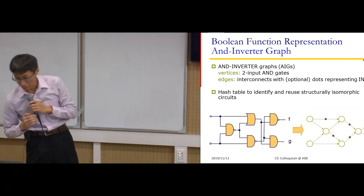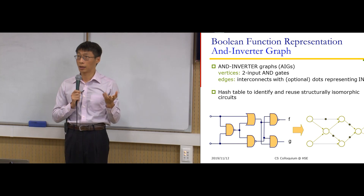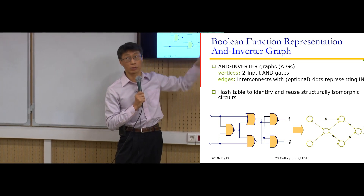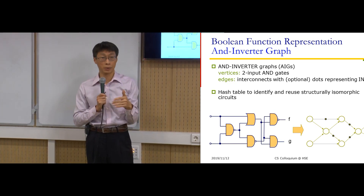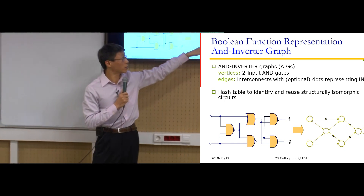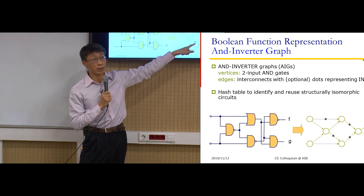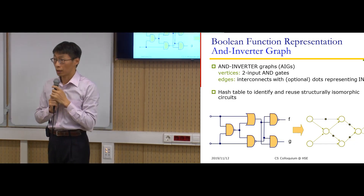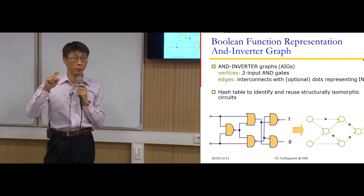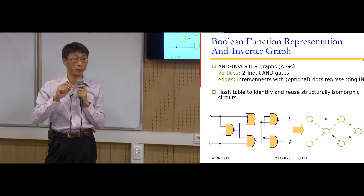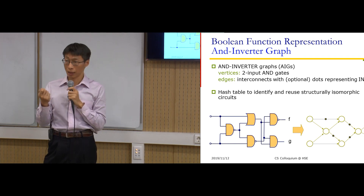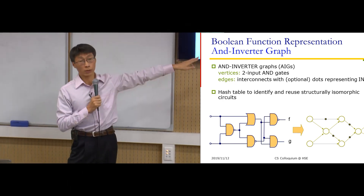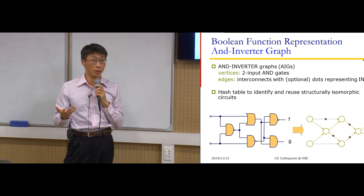For AIG, every node is an AND gate. You don't need to interpret the type — it's always two-input AND. Dotted edges denote an inverter on that edge. This data structure is efficient because you can use a fixed number of bits to represent each AIG node, making it economical to represent, which is why it is widely used in logic synthesis to represent Boolean functions.